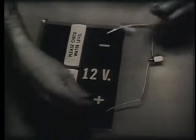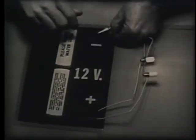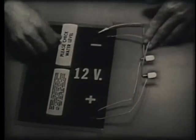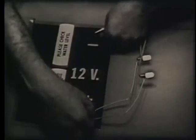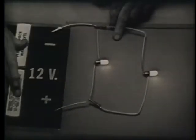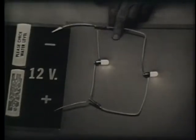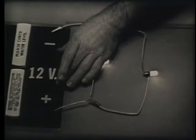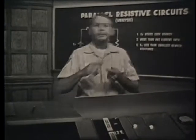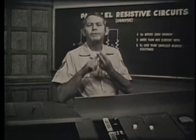This is because each of the branches is connected directly across the battery. If I move this light over here, I have exactly the same circuit. The total voltage still appears across each branch. Now since the applied voltage is felt across this bulb, I can connect another one and still have the applied voltage across it. We could add a third branch, a fourth branch, and on and on — each branch would still have the total applied voltage. This fact is supported by Kirchhoff's voltage law, which states that the applied voltage is dropped around each closed loop. So a parallel circuit has more than one path for current, and the applied voltage is felt across each branch.